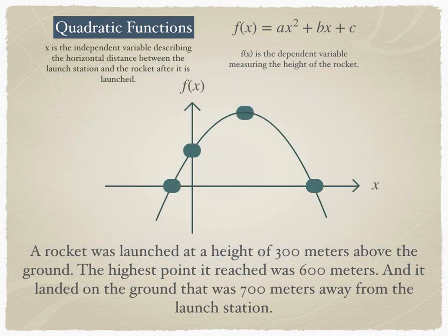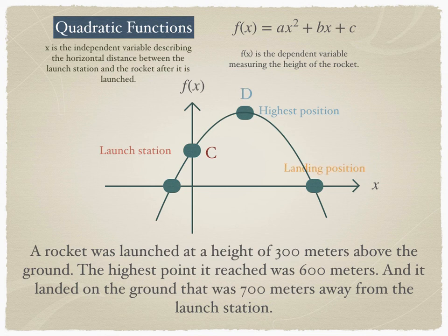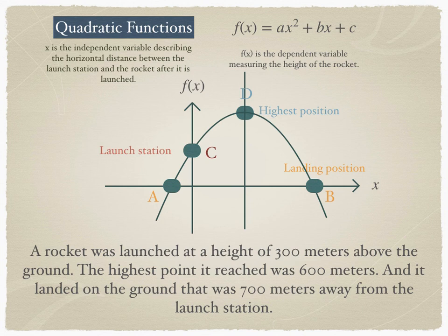There are four interesting points to pay attention to: the launch station, the highest position, and the landing position. Because of the symmetrical nature of the parabola, you can expect another landing position on the other side of the vertical line through the highest point. In this application, you have one visible landing position b, but there is also an invisible landing position a, which is the reflection of b over the vertical line through the highest position.